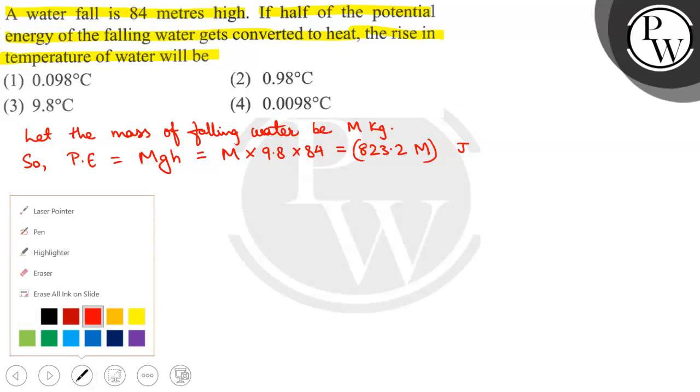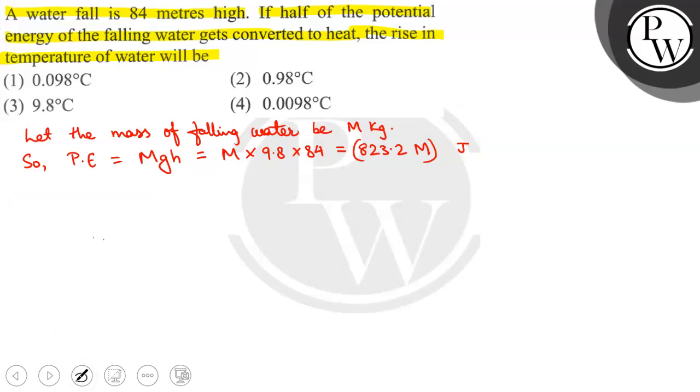How much heat energy will be? Half of potential energy. So heat energy is equal to half into 823.2 Joule, which gives us 411.6.